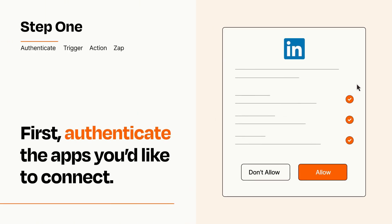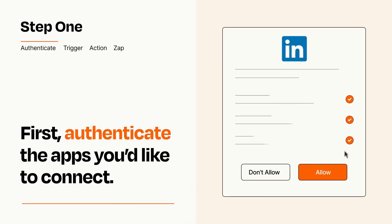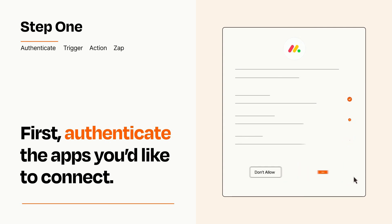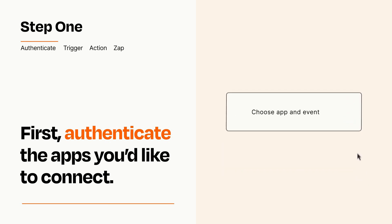To get started, you'll just need to authenticate your apps, which takes just a few seconds. Zapier meets industry standards for encryption when connecting with each of your apps.